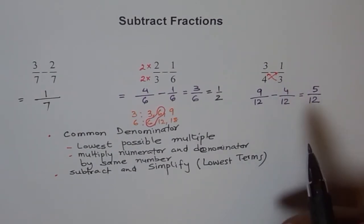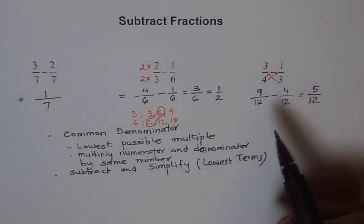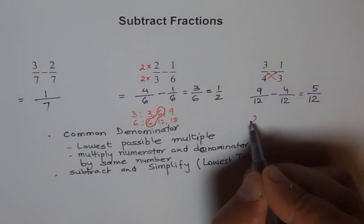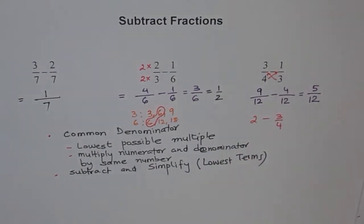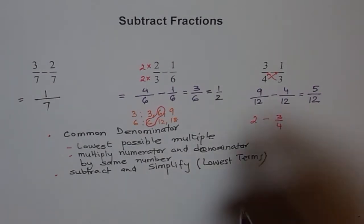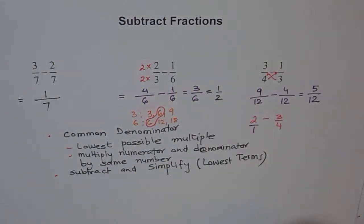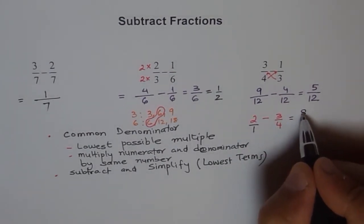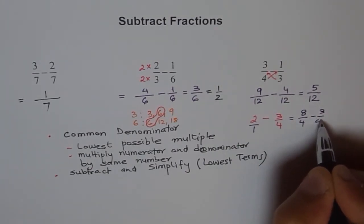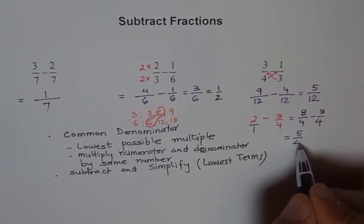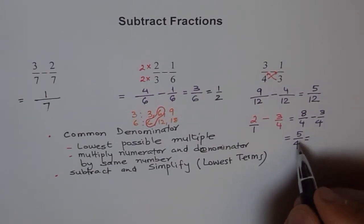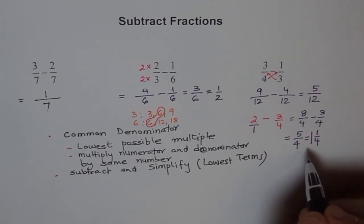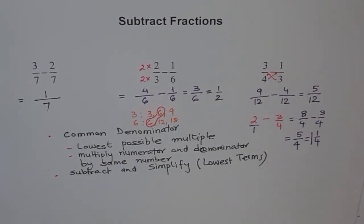Now here is a question: how will you do 2 minus 3 over 4? Think of 2 as 2 over 1. Then multiply both numerator and denominator by 4 to get the common denominator — so you get 8 over 4 minus 3 over 4, which equals 5 over 4. That is an improper fraction, which you can write as 1 and 1 over 4. Look into my videos on improper fractions and mixed fractions to understand that step.